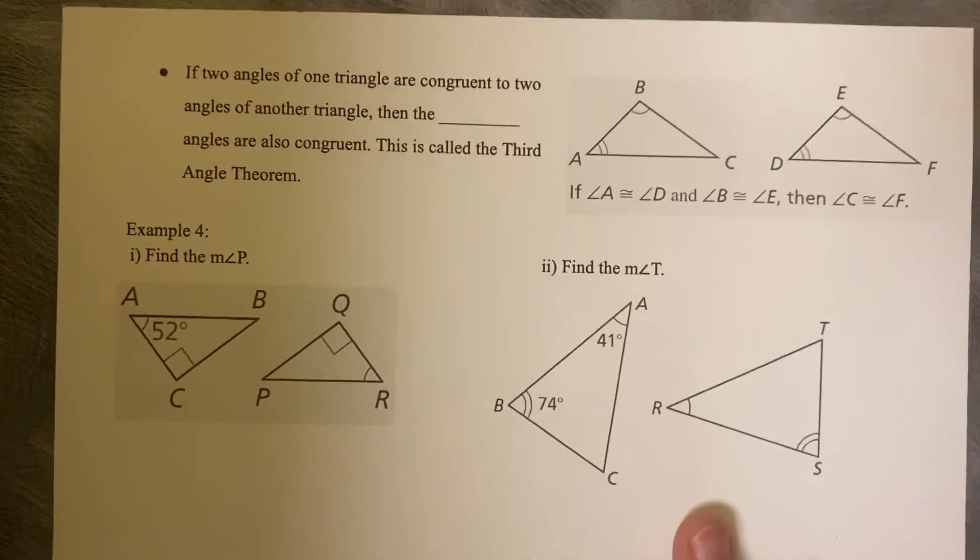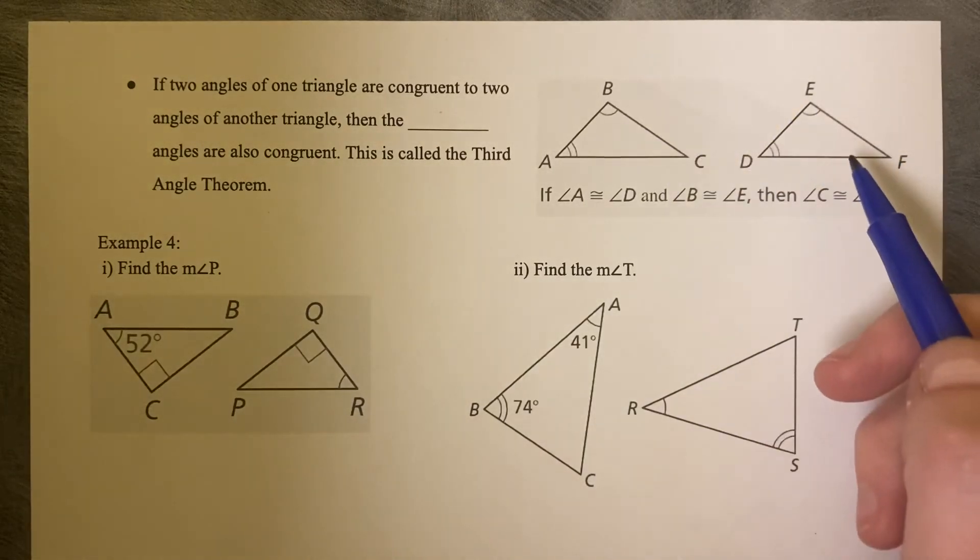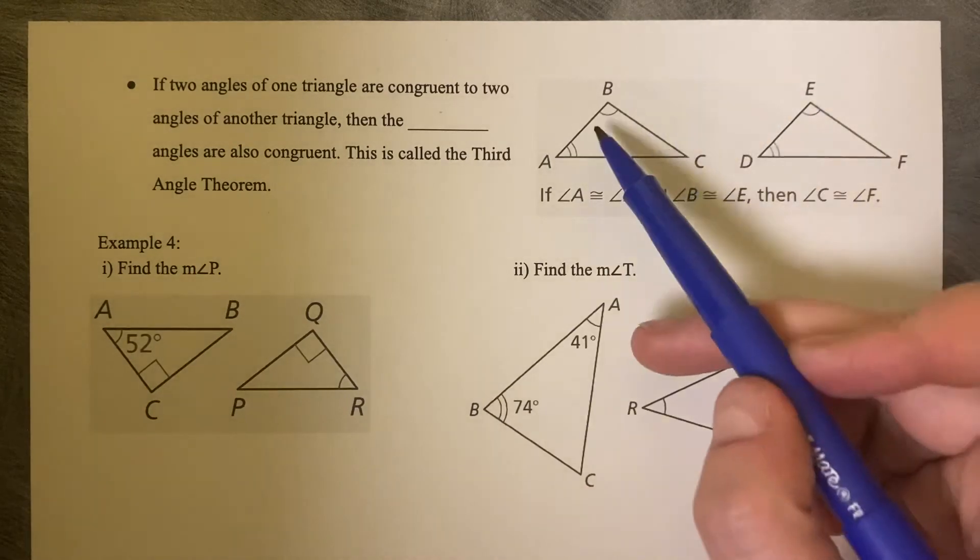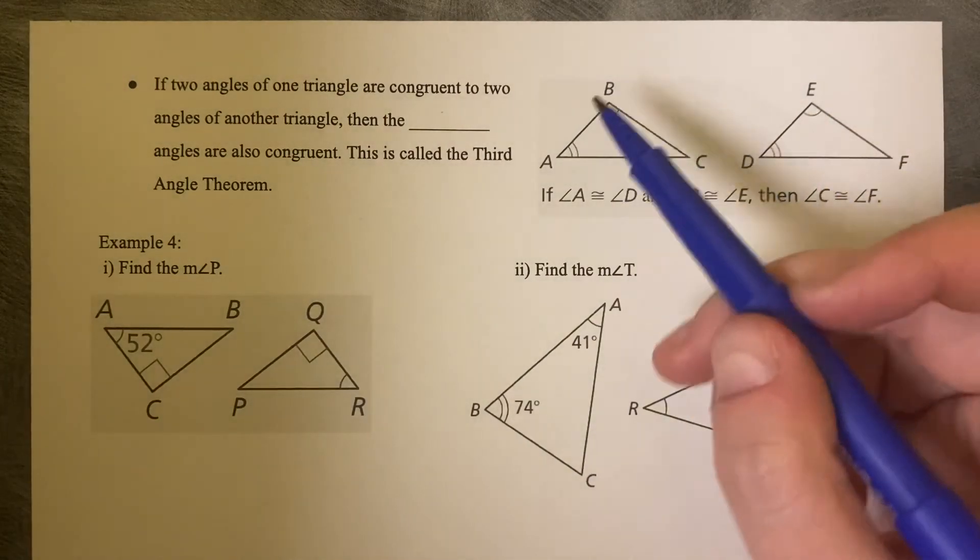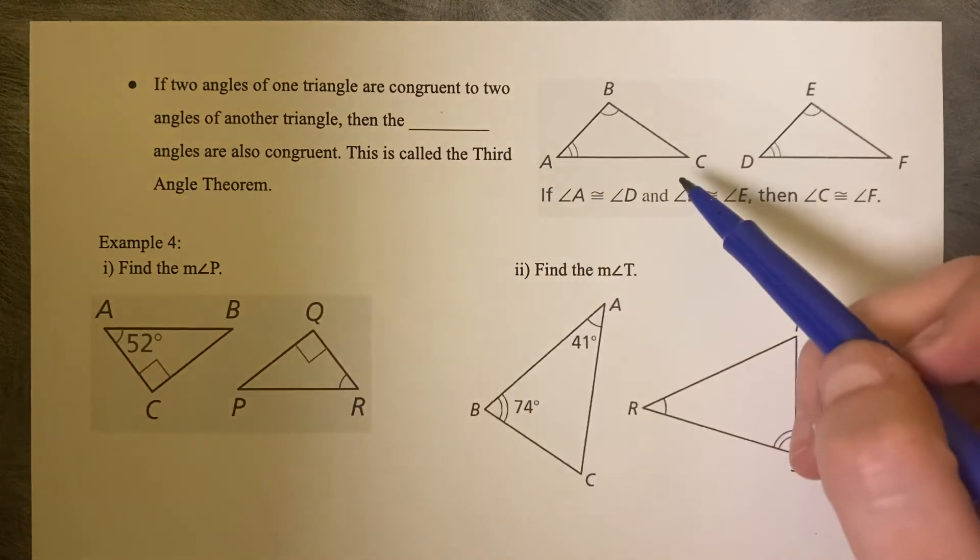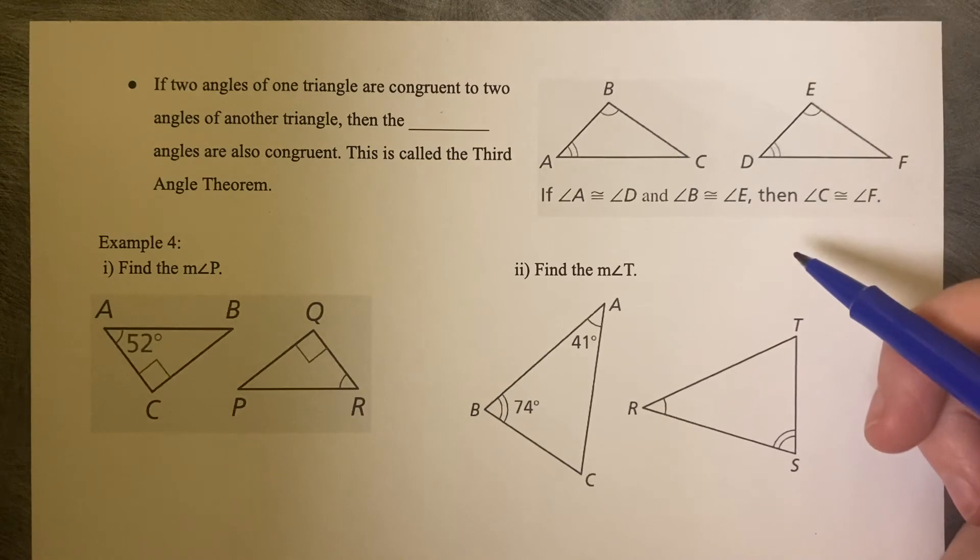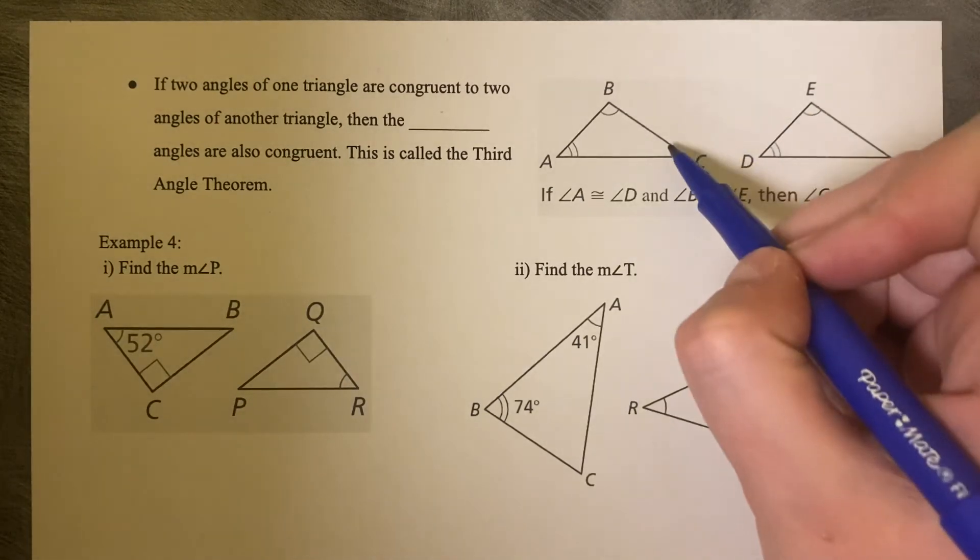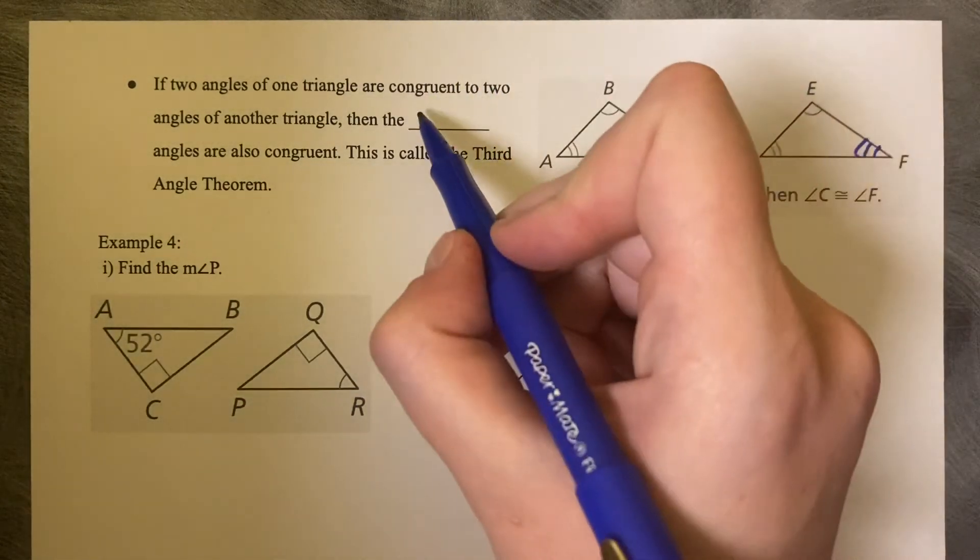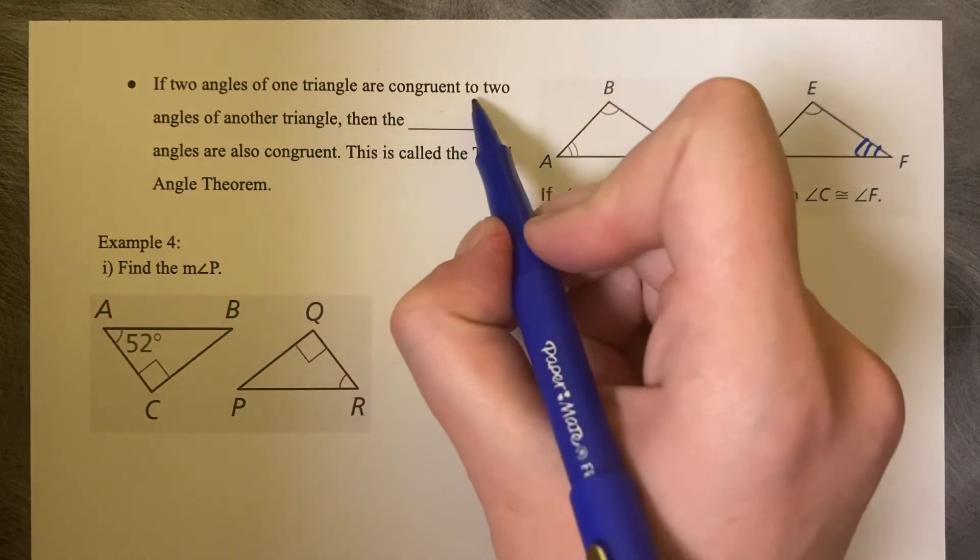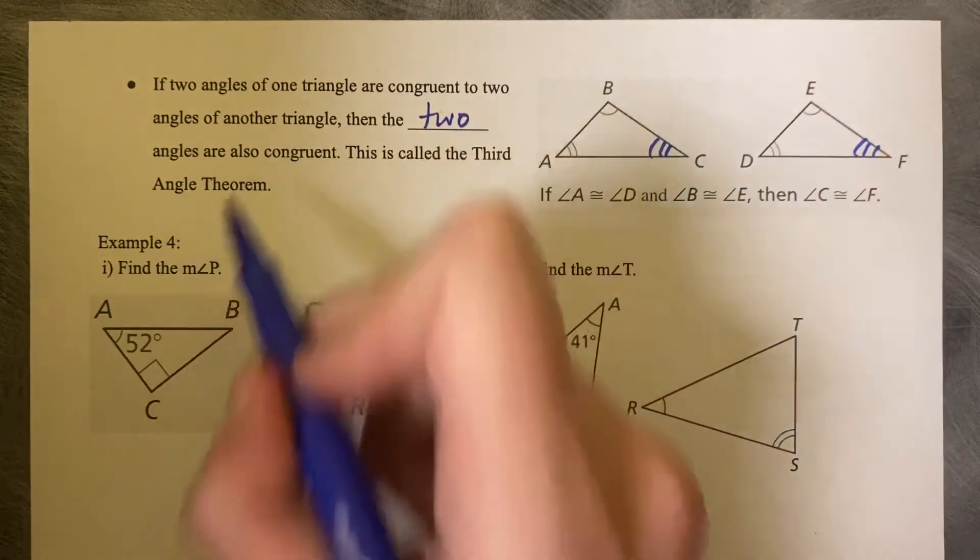So what is a minimum amount of information that you need to determine whether or not, not that the triangles are congruent, but that their angles are congruent? There's something called the third angle theorem, that if you know two angles of one triangle and they're congruent to two angles of a second triangle, then the third angles must be congruent as well. So that means that angle C must be congruent to angle F. So you need to know that two angles of one triangle are congruent to two angles of another triangle, then the third angles are also congruent. It's called the third angle theorem.